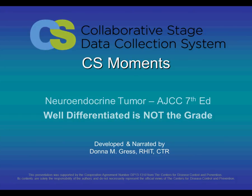This is the Collaborative Stage Data Collection System, CS Moments. The topic for today is the Neuroendocrine Tumor Chapter of the AJCC 7th Edition and also the Collaborative Stage Schemas for Neuroendocrine Tumors. We will be discussing: Well-Differentiated is NOT the grade. I'm Donna Gress, AJCC Technical Specialist.